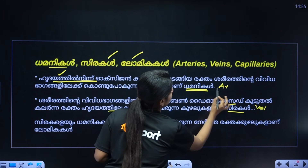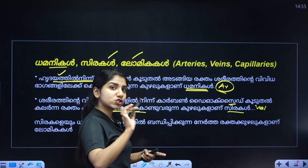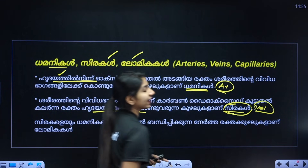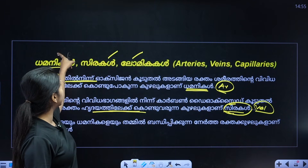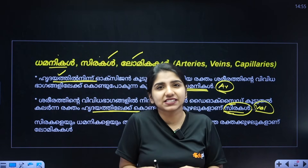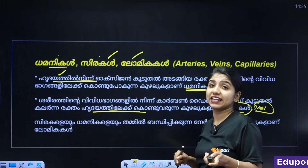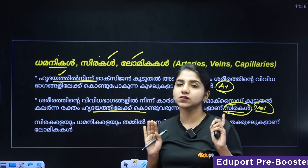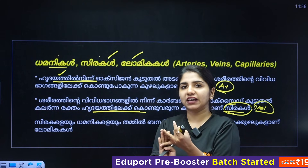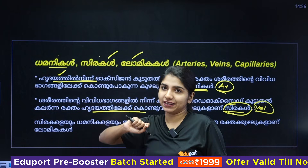Arteries have muscular walls. If you cut an artery, you will see there is blood flow. Blood is carried to cells and organs. There are many capillaries connecting arteries and veins throughout the body.